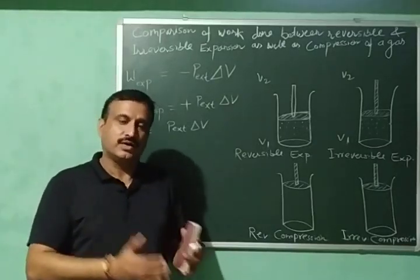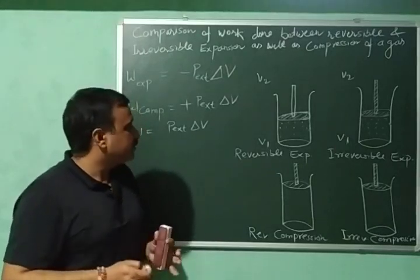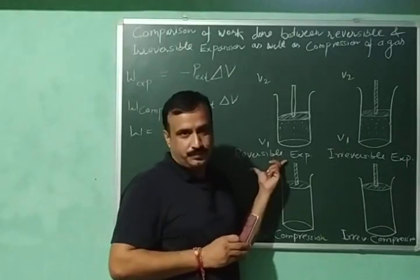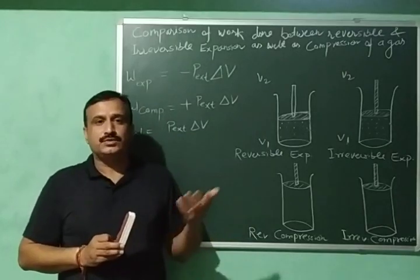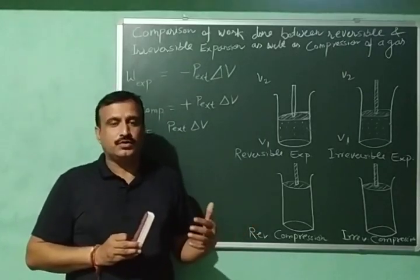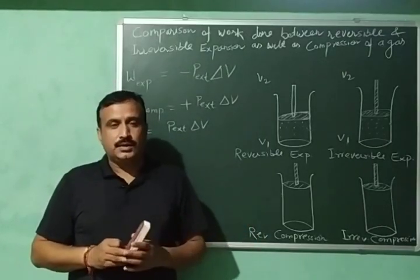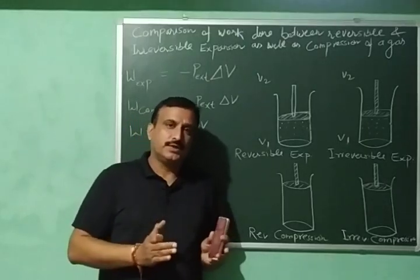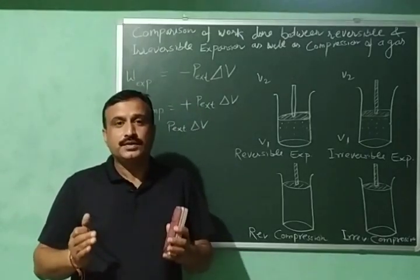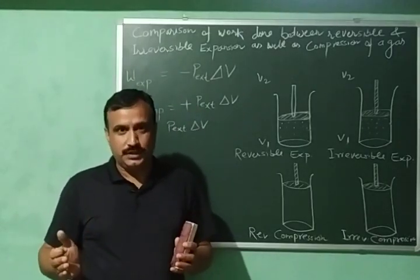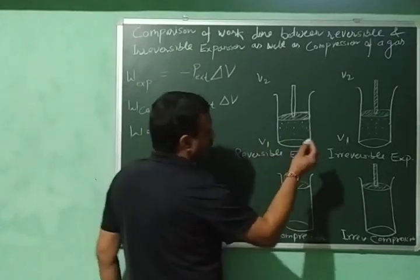If P_external is more, the work done will be more; if P_external is less, we will have less work done. Now let us discuss reversible expansion. The requirement for a reversible process is that it must be carried out very, very slowly — infinitesimally slowly.